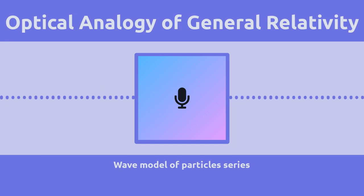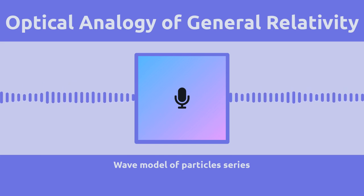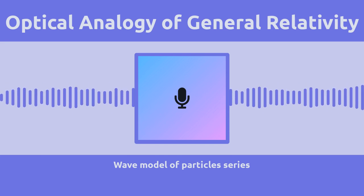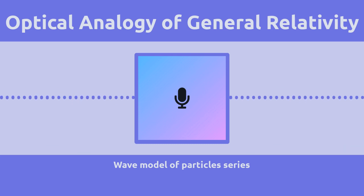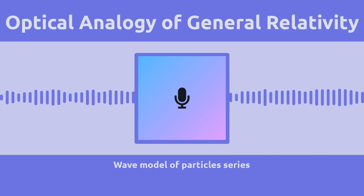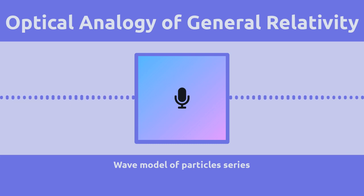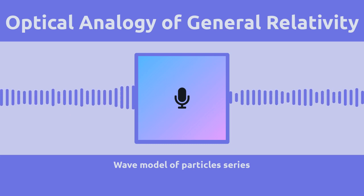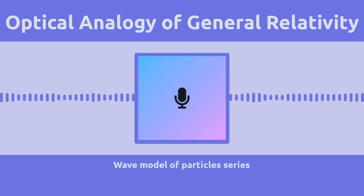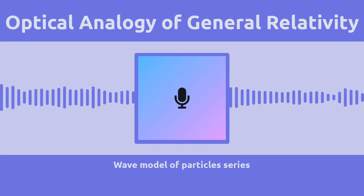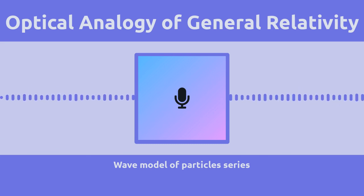Sounds crazy, but it's brilliant. It's fascinating how this paper brings together these totally different areas of physics. We're going to break down this optical-mechanical analogy and see how it works when talking about general relativity — things like how light bends around stars and even super precise radar measurements, all through this surprisingly simple analogy.